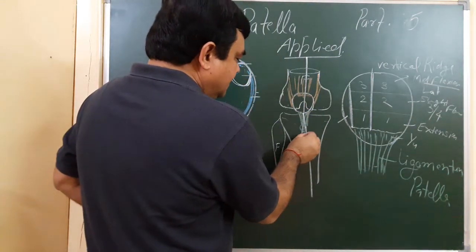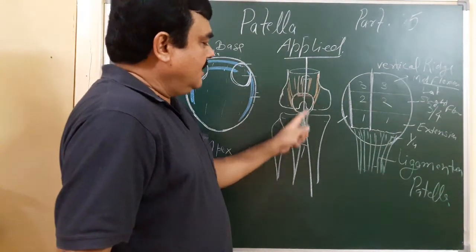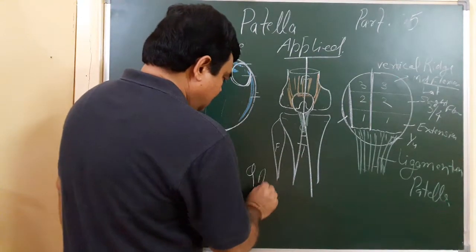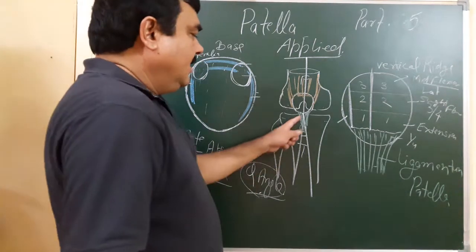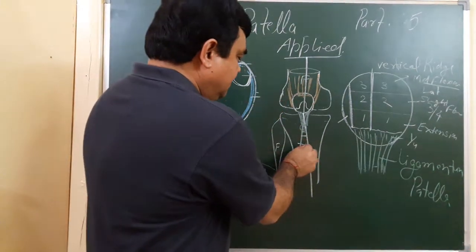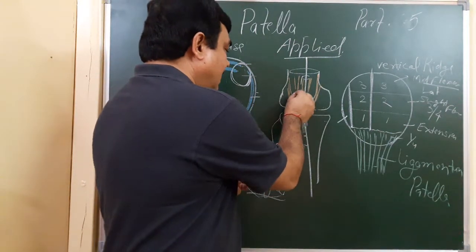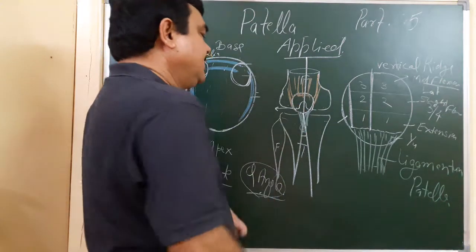There is slight angulation between the long axis of the femur and the long axis of the tibia. This is known as the Q angle. Due to this Q angle, the patella dislocates on the lateral side.